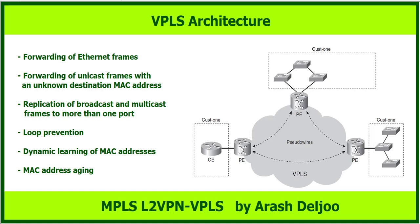Similar to an Ethernet switch, MAC addresses are aged out after a certain period of not receiving a frame from that MAC address. The aging time is refreshed after receiving a frame. This means that in VPLS, we have all of these functions: forwarding of Ethernet frames — when a PE receives a frame, it encapsulates it with two labels and forwards it to other VPLS instance sites. Forwarding of unicast frames with an unknown destination MAC address results in flooding. Replication of broadcast and multicast frames to more than one port also applies.